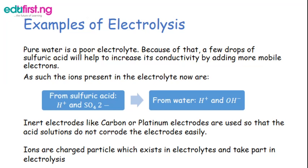Inert electrodes like carbon or platinum electrodes are used so that the acid solution does not corrode the electrodes easily.